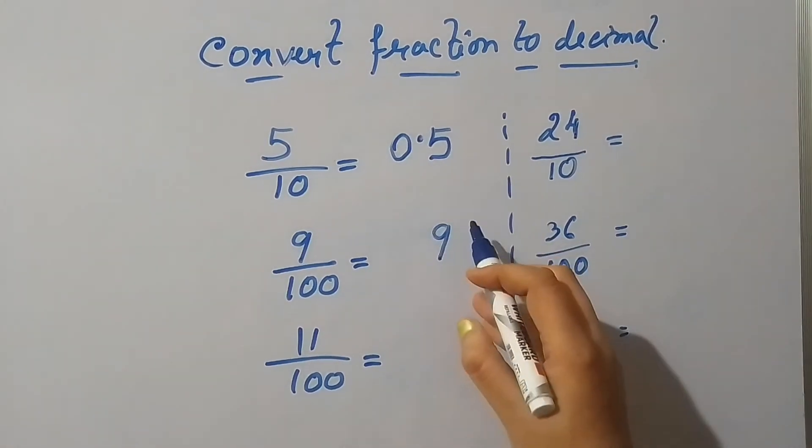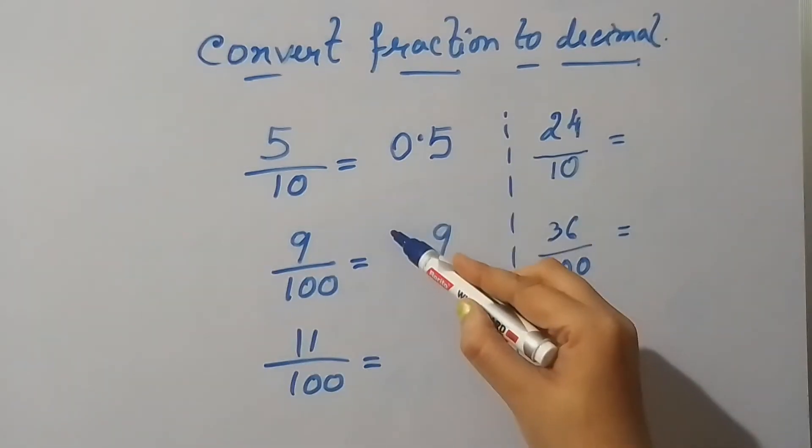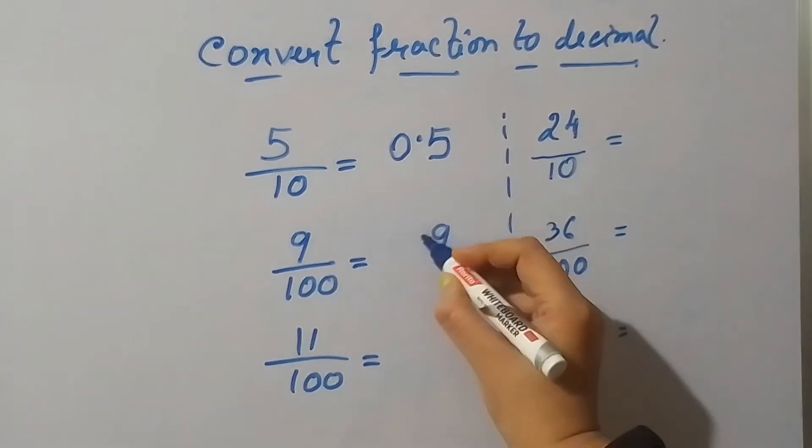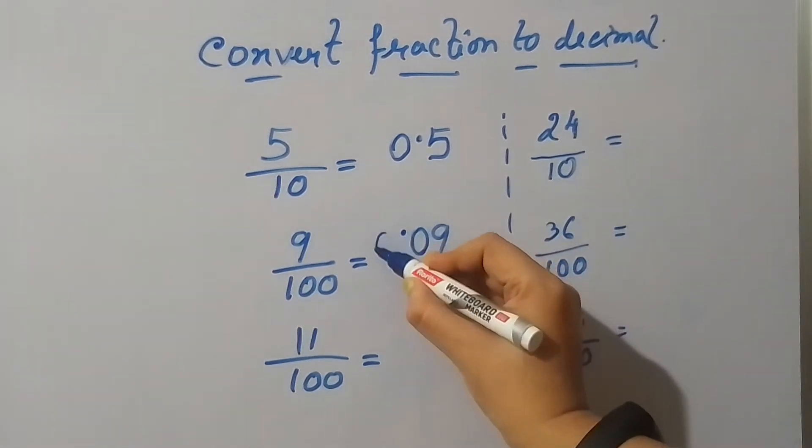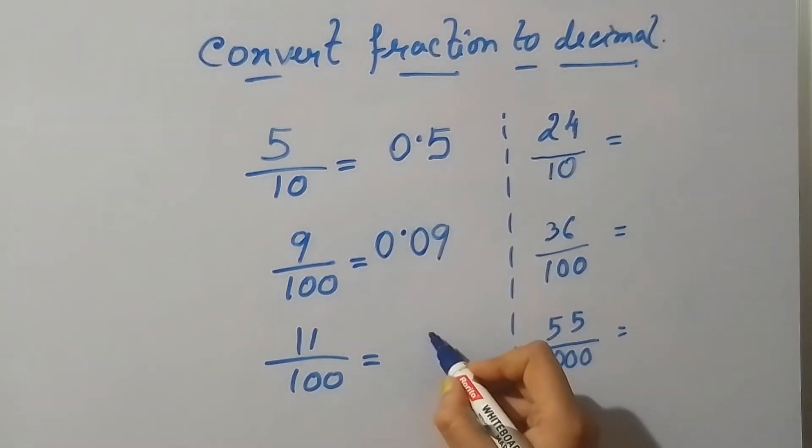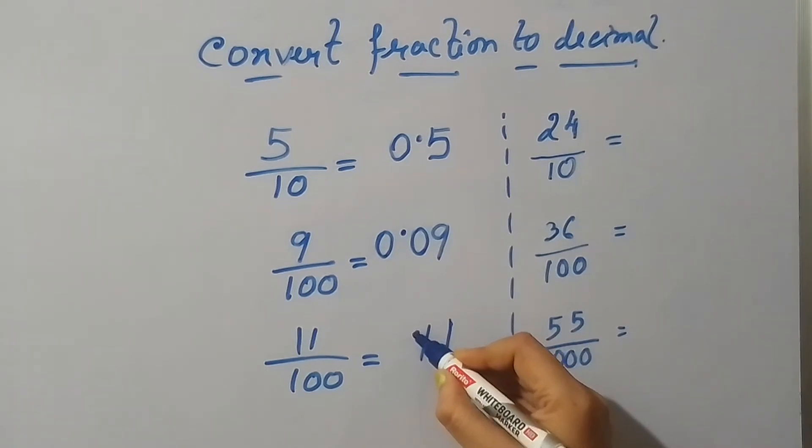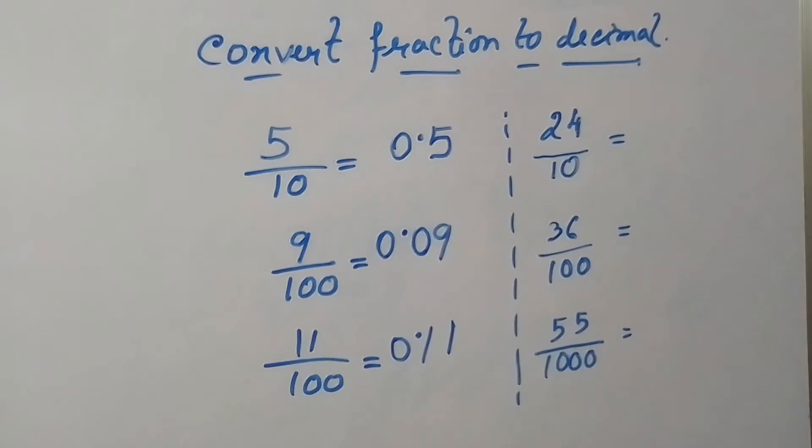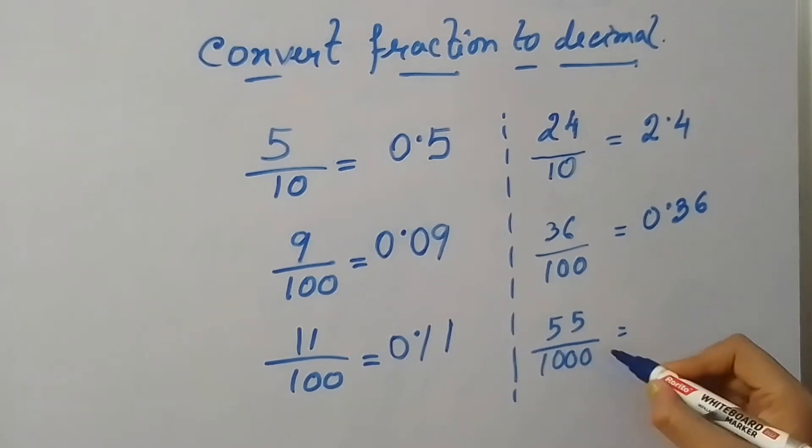Just we have to consider the number of zeros in the denominator. How many zeros are there, that many times the decimal will shift left. We already know that for a normal number, the decimal will be at the right side. So here the equivalent decimal number will be 0.09, and coming to the next number it will be 0.11. Considering the same rule, the rest of the answers will be 2.4, 0.36, and 0.055.